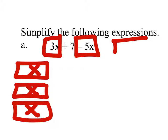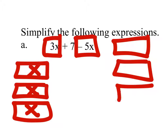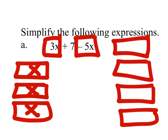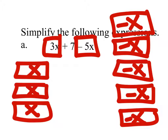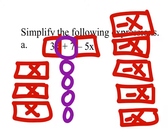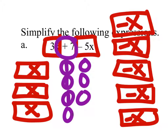And then over here we would have 5 negative x's. These are all negative x's. And then we'd have 7 ones: 1, 2, 3, 4, 5, 6, 7. These are all 1's.